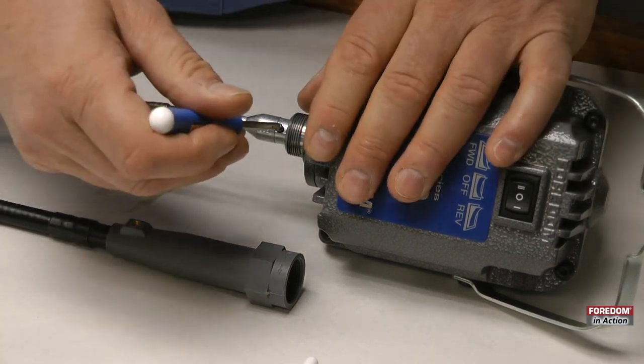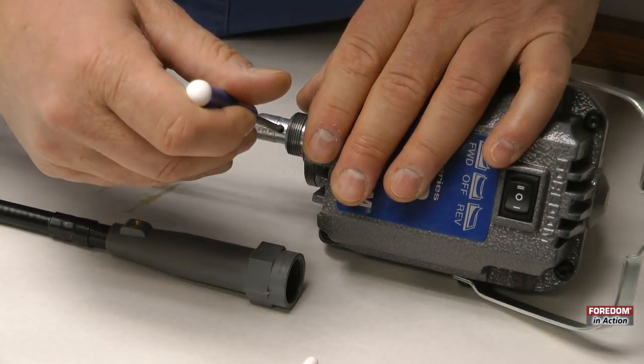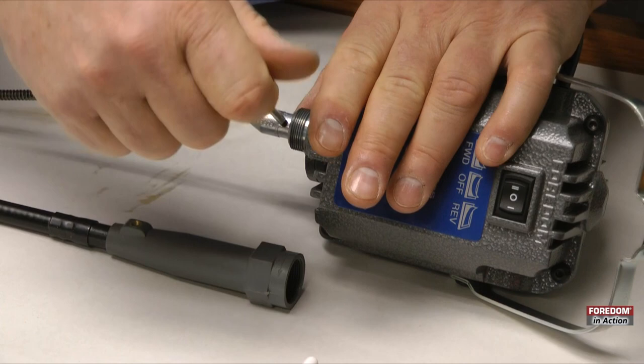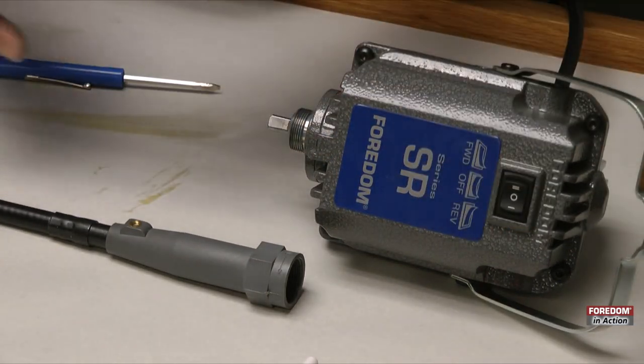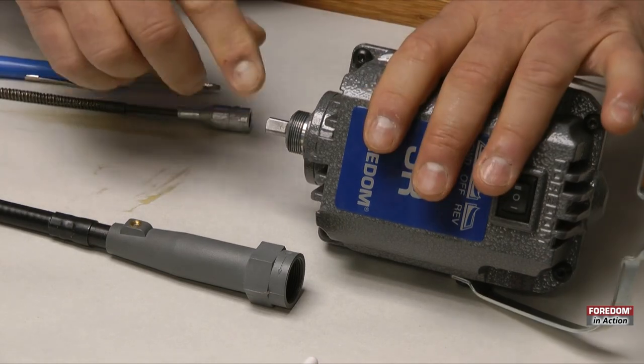Next, take a small screwdriver, come up, loosen the set screw, and remove the shaft coupling from the motor.